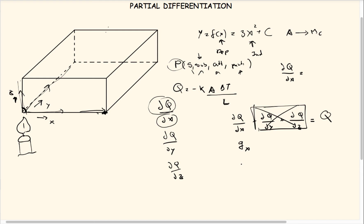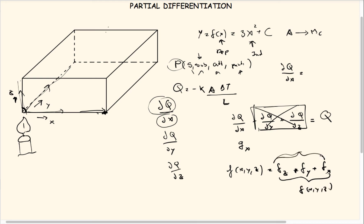This also tells us that partial derivatives can be represented differently. If your function is f of x, y, z, the partial derivative with respect to z can be written as f sub z, with respect to y as f sub y, and with respect to x as f sub x. Joining all these factors together gives you back the original function, but each one individually is a partial derivative.